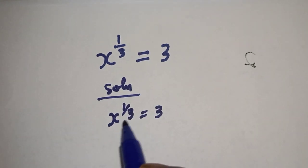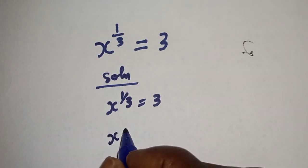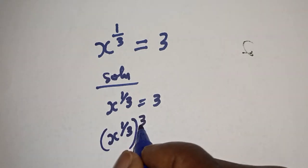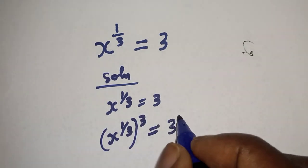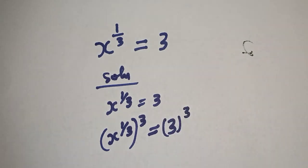Let's multiply the exponent of both sides by 3. That is, x raised to power 1 over 3 to the power of 3 is equal to 3 raised to power 3.